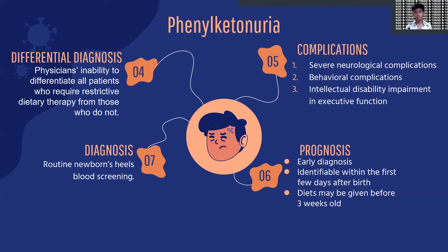PKU is a disease that impairs the body's ability to metabolize phenylalanine. High concentrations of phenylalanine in the blood are toxic to the nervous system and can cause several neurological and behavioral complications, including intellectual disabilities, increased anxiety, depression, and impairments in executive function. Through the help of therapy, these symptoms are more likely to be reduced. The prognosis of PKU depends on how early the disease is diagnosed and also depends on the mother's condition during pregnancy. Mothers who follow a low-phenylalanine diet show better results for their babies.